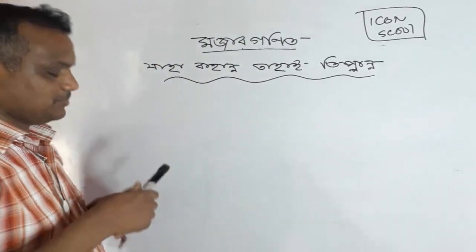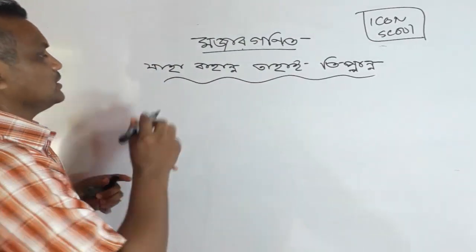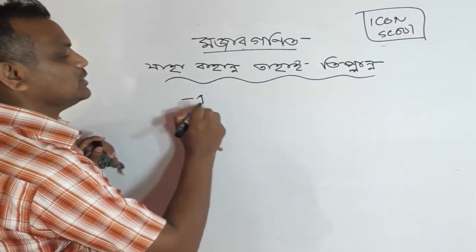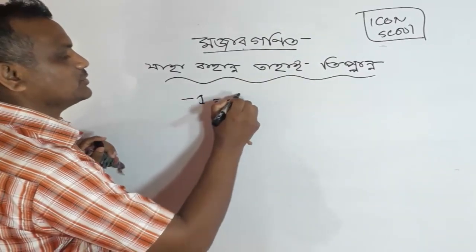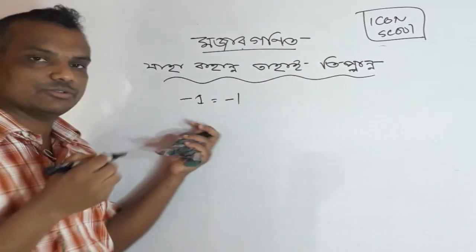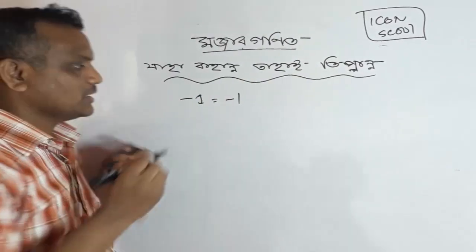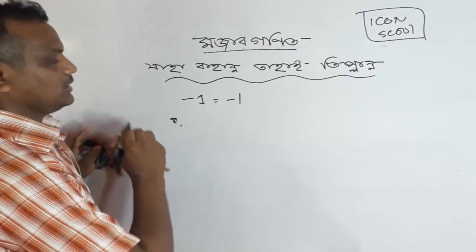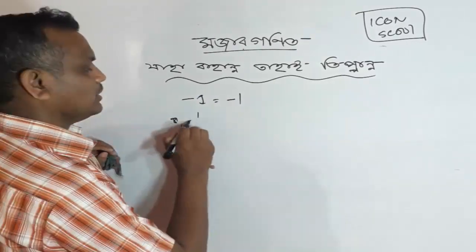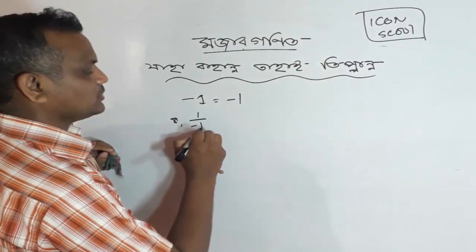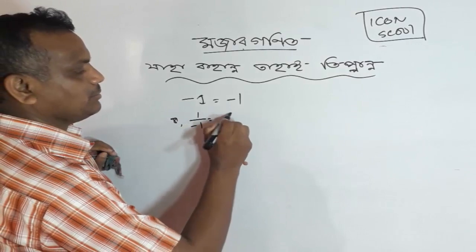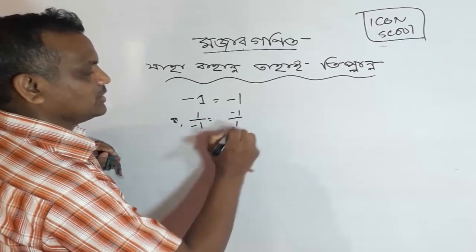So, what are the things that we have? Let's see. I'm going to write minus 1, minus 1, minus 1. This is minus 1 and minus 1. Now, I'm going to write minus 1 and minus 1.